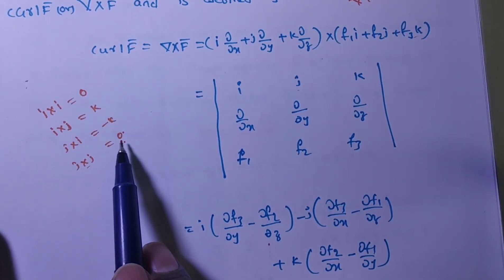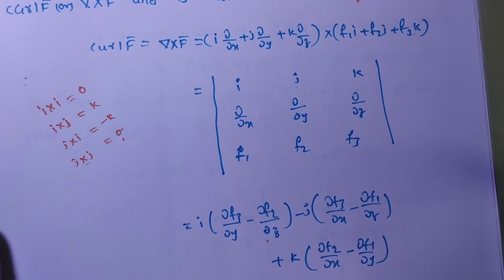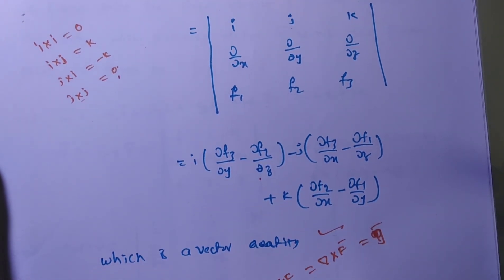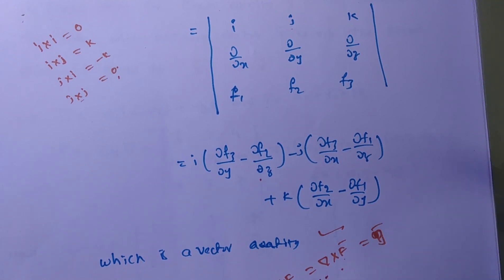Sometimes you may get del cross f̄ equal to 0. Zero means there is no rotation. Cross gives rotation, so if the cross product of two vectors is zero, there is no rotation. For example, think of a fan — I am giving this symbolically, not exactly.